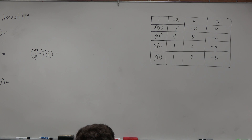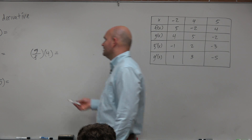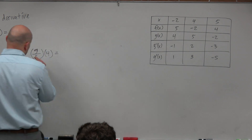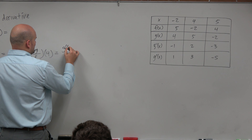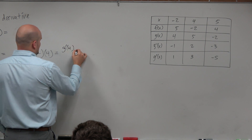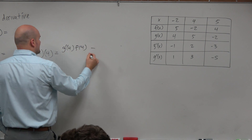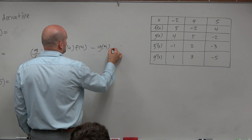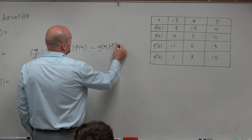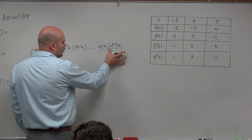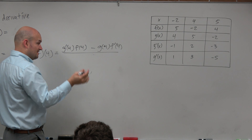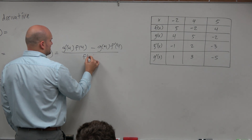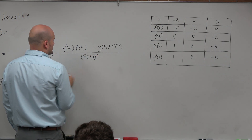In the quotient rule, we'll write it with the numerator with the denominator first, but it really doesn't matter. We can just write this as g prime of 4 times f of 4, minus g of 4 times f prime of 4. The order of these two does not really matter, but you have to have that correct. And then you take your denominator squared.